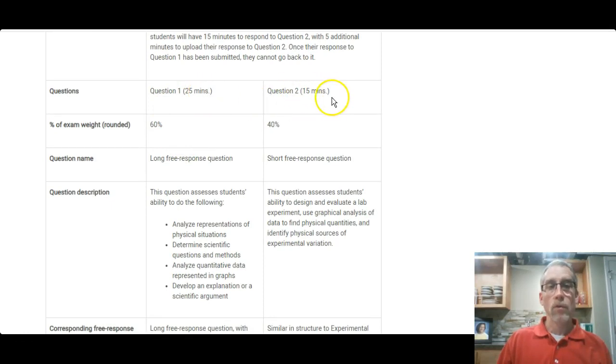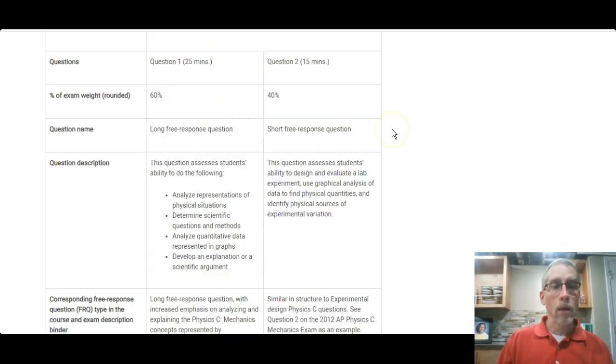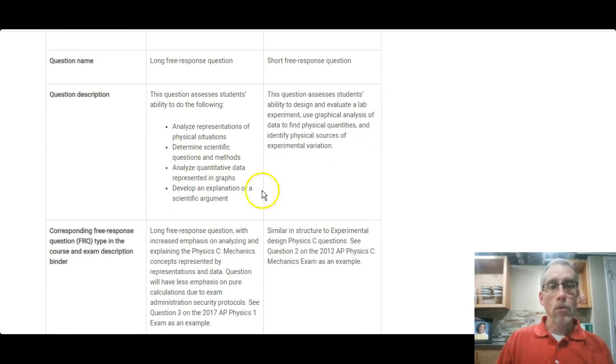So the rest of this goes into the detail of the two questions. So, again, one is 25 minutes and one is 15 minutes. They are weighted a little bit differently. That kind of makes sense. They described the question a little bit, but it's a little ambiguous. So, you know, I'd say this first one sounds a lot like a lot of the FRQs that we've looked at before. So you're going to have a diagram. They're going to ask you a series of questions.